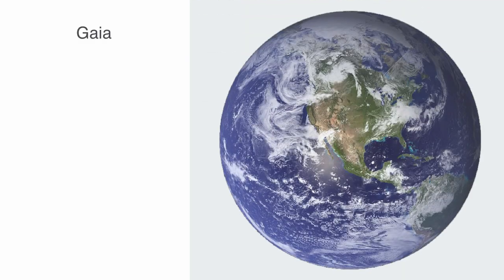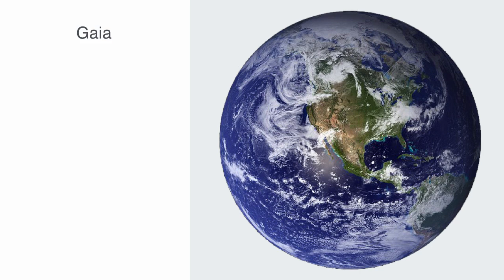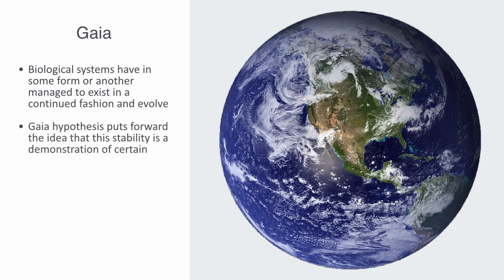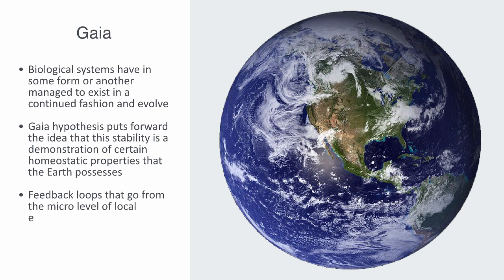Life emerged on Earth over 3.5 billion years ago. Since then, despite a number of planetary-scale catastrophes such as snowball events, asteroid bombardments, runaway climate effects, and changes in the Sun's brightness, biological systems have managed to exist continuously and evolve. The Gaia hypothesis puts forward the idea that this stability, rather than being the product of fortune, is a demonstration of certain homeostatic properties that the Earth possesses — suggesting that feedback loops go from the micro level of local ecosystems to the global biosphere in a way that enables the conditions for its preservation and regional and global homeostasis.